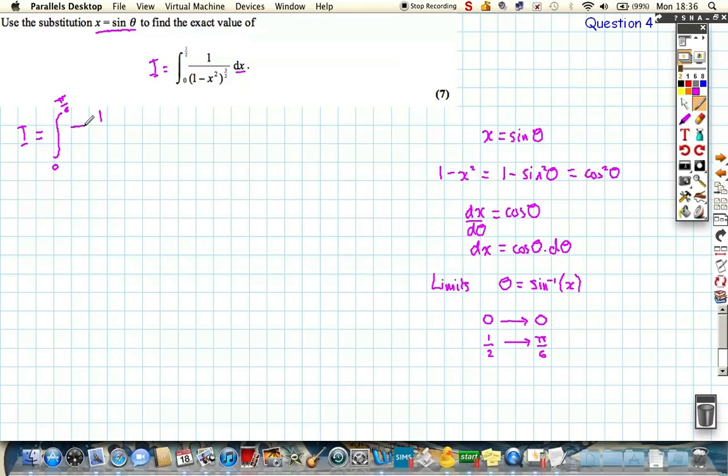and this is going to be a bit of a squeeze, the integrand. We know on the bottom it's cos squared theta, so it's cos squared theta to the power of 3 over 2, and on top we're replacing dx with our expression cos theta d theta.